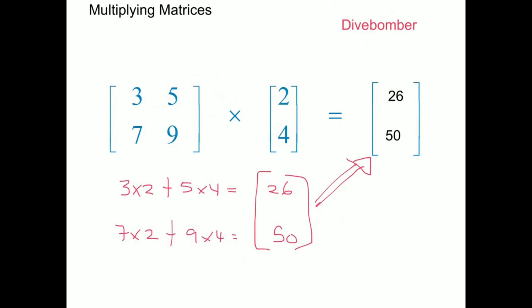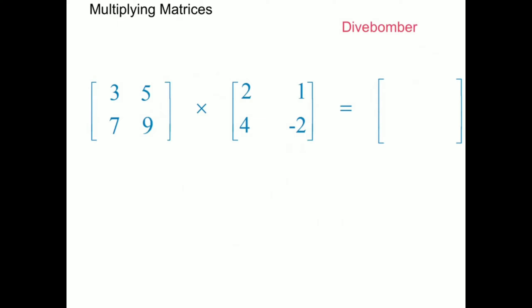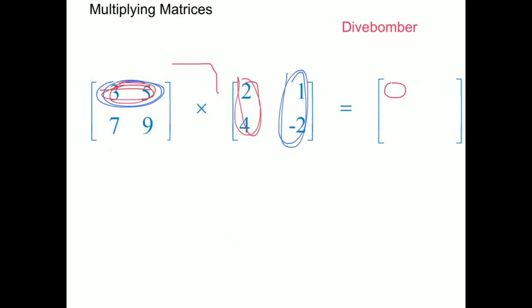That is how you do matrix multiplication. In this next example we're going to be multiplying a 2 by 2 matrix with a 2 by 2 matrix, and in this case the answer is also going to be a 2 by 2 matrix. Remember the process we're using is called dive bombing, where each of the rows dives bomb the columns and the result goes into the corresponding position of the answer matrix.